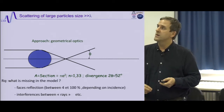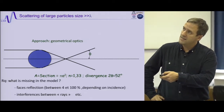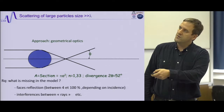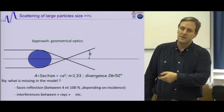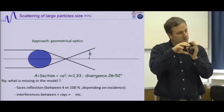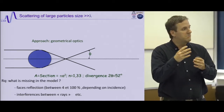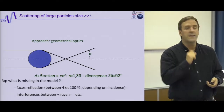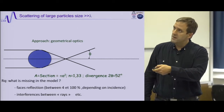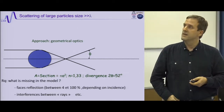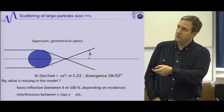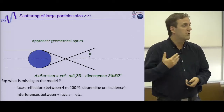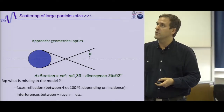Going back to basics: what happens when light encounters a small particle? If I have a particle and a light beam coming on it, I can take a geometrical picture. If the particle is big, I have a cross-section A in the direction of the light — π a² if the particle has radius a — and this tells me basically the deviation of the light rays. What is missing is the reflection at interfaces and interference effects from the wave picture, but it's actually quite a good approximation for large particles.